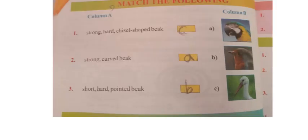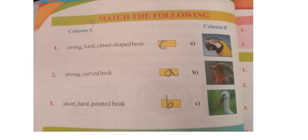Match the Following - different types of bird beaks are given and we need to match them. First: strong, hard and chisel-shaped beak. The chisel-shaped beak is like a straw shape used for sucking nectar, so the first answer is C. Moving to the second: strong curved beak, so the second answer is A.